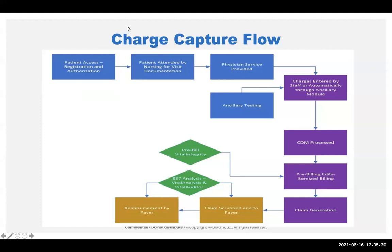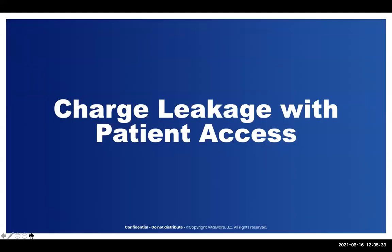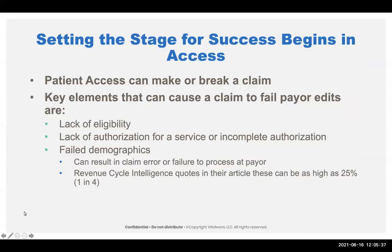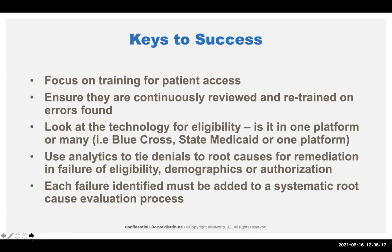Starting with patient access: patient access can make or break a claim. Key elements that can cause a claim to fail are lack of eligibility, lack of authorization or incomplete authorization, and failed demographics. According to a Revenue Cycle Intelligence article, as high as 25% — one in four claims — will fail because of wrong, incomplete, or erroneous demographics. This is a big cause for concern.